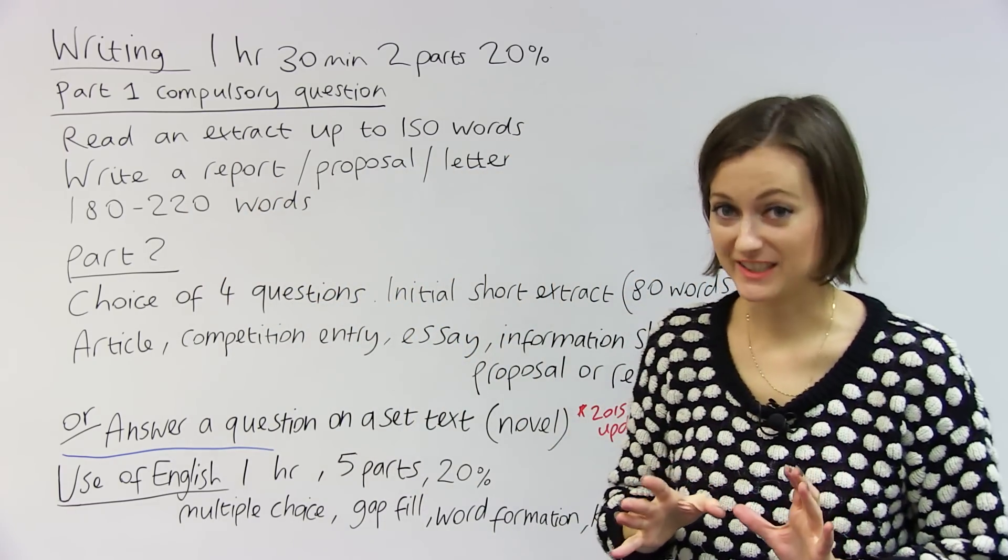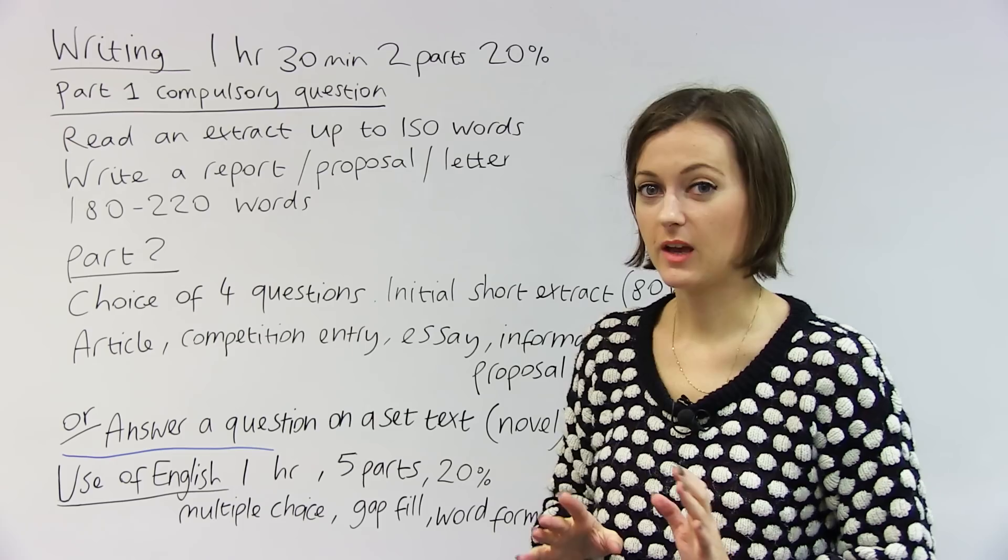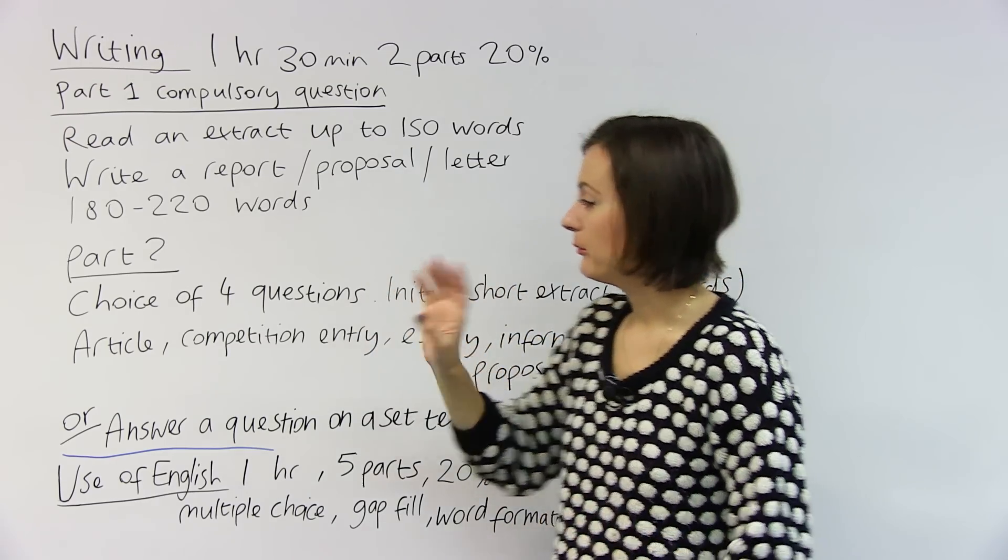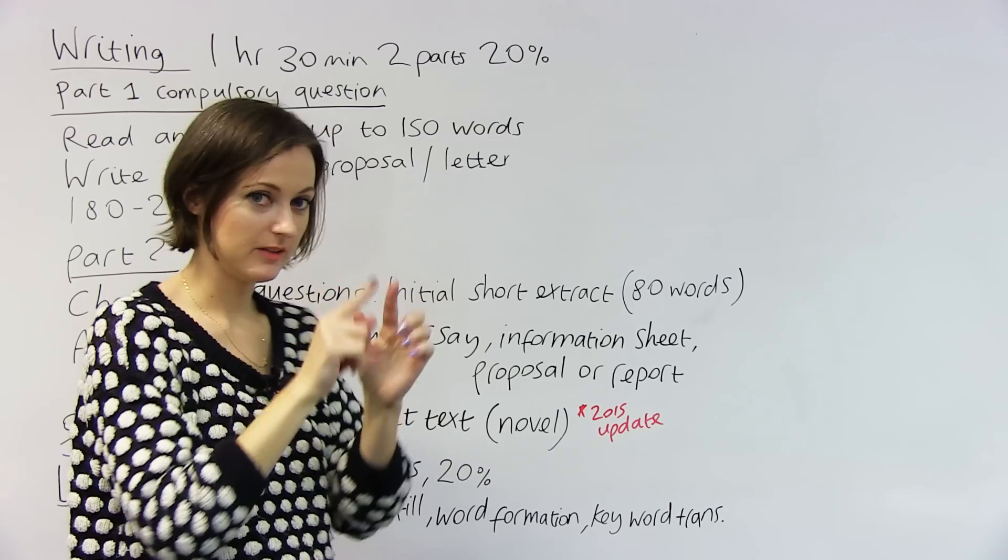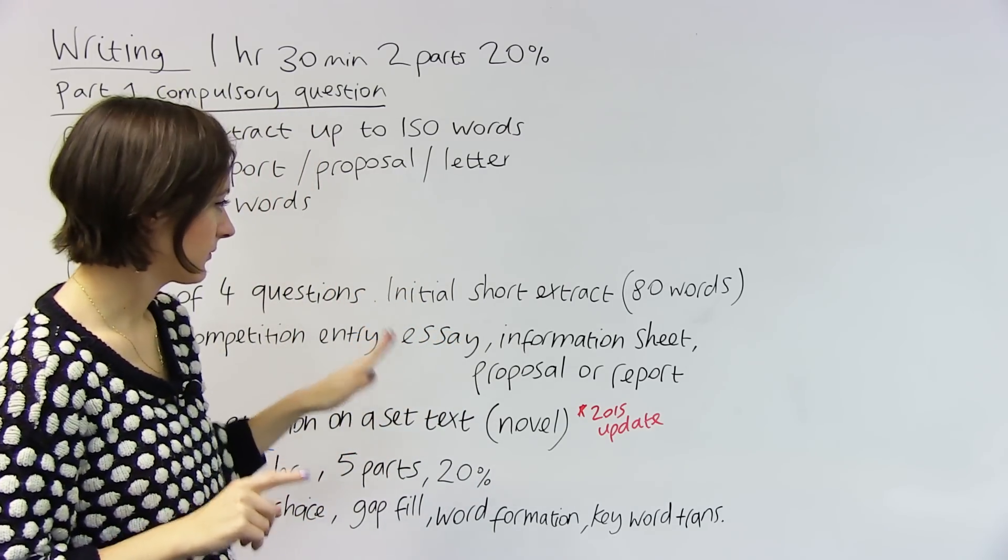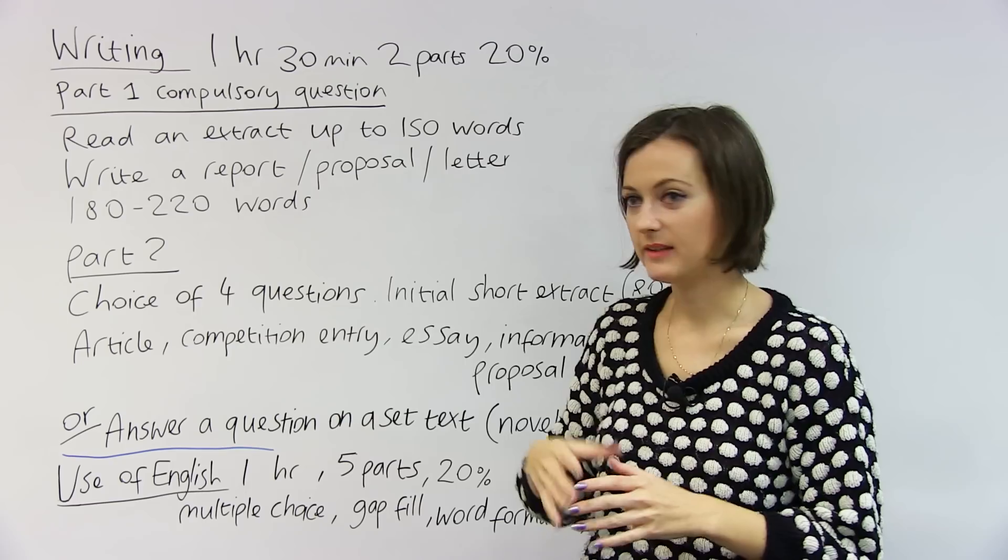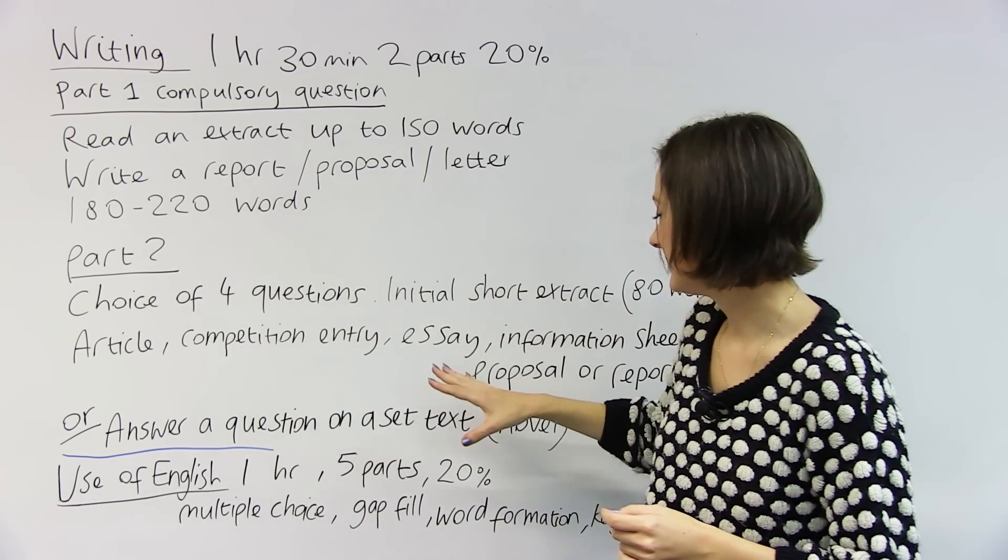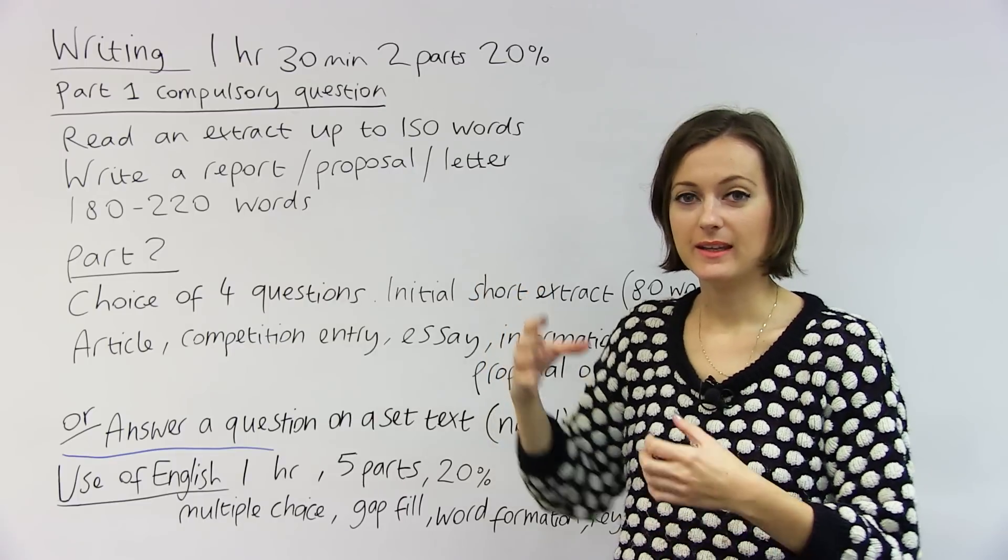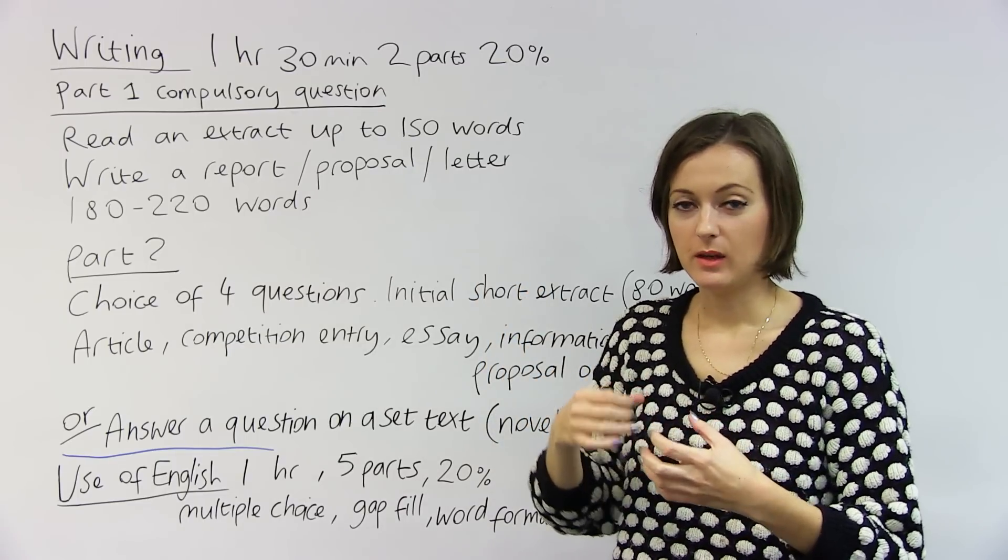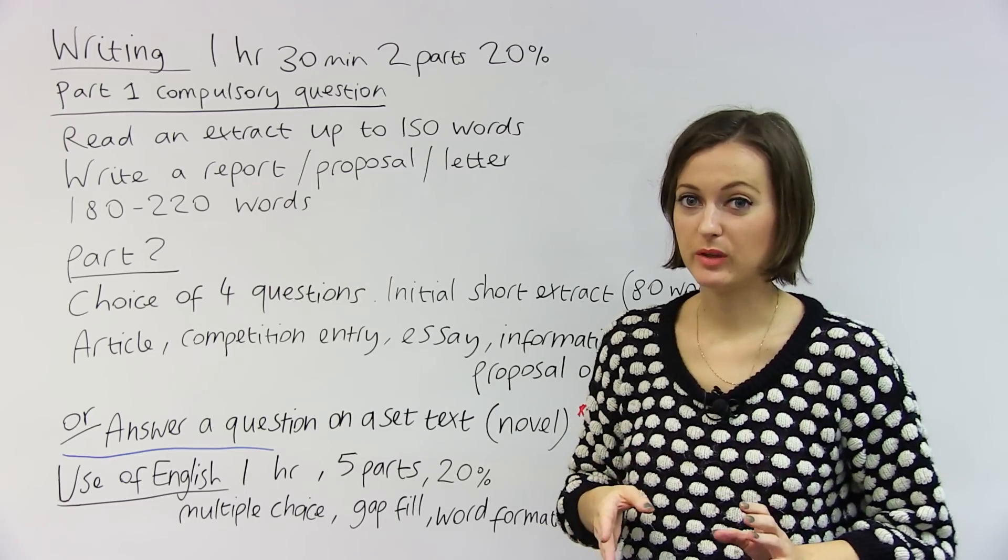Once you're done with the first part of the writing test, part two, you've got some choice here. You can see which question suits you. There are four questions. First of all, you read a short extract, similar to part one, but it's much shorter this time. It's just 80 words. You use this to then write an article or a competition entry, an essay, a report, a proposal, or information sheet. So exactly like in the first part, it's testing your ability to write in different styles of English, something that you haven't seen before and haven't been able to prepare.